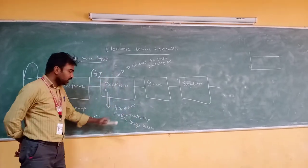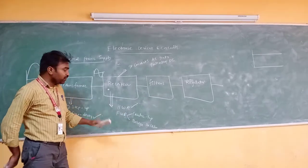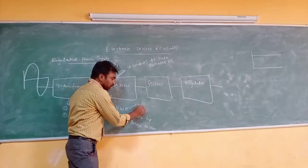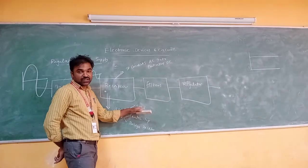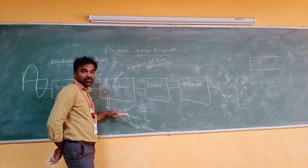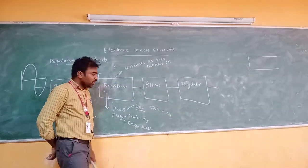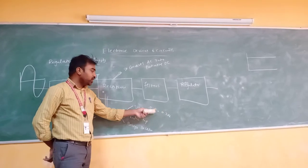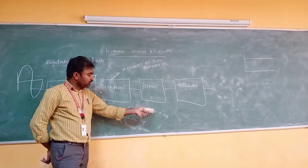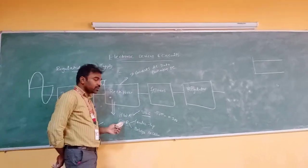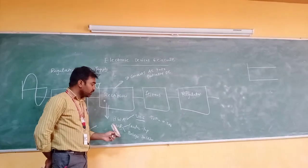Initially we start with the half-wave rectifier. The disadvantages of the half-wave rectifier are: ripple factor is 1.21, meaning more ripples are present; efficiency is only 40.6%, meaning only 40.6% of the AC input power is converted into DC. The transformer utilization factor (TUF) is only 0.286, meaning only about 28% of the transformer is utilized. These are the biggest disadvantages of the half-wave rectifier. To overcome these limitations, we prefer the full-wave rectifier, which has increased efficiency, reduced ripples, and a higher transformer utilization factor.